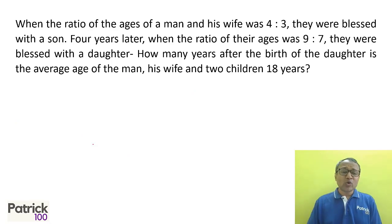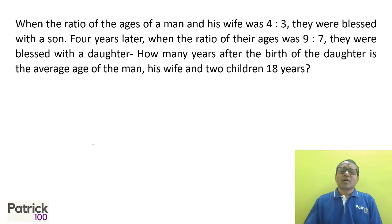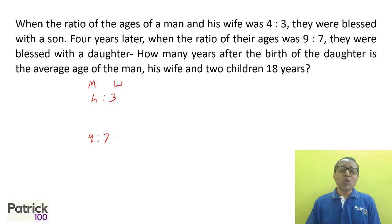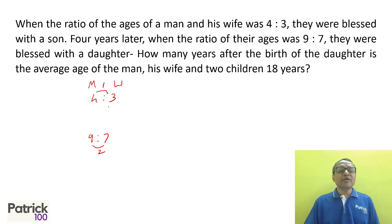Next: ratio of ages — try to solve this. Man and wife ratio is 4:3, and after the son was born it becomes 9:7. Remember, the difference in the man and wife's age will always remain the same no matter how many years pass. The difference in 4:3 is 1, and in 9:7 is 2. The first step is to make the differences equal, so multiply the first ratio by 2 to get 8:6.